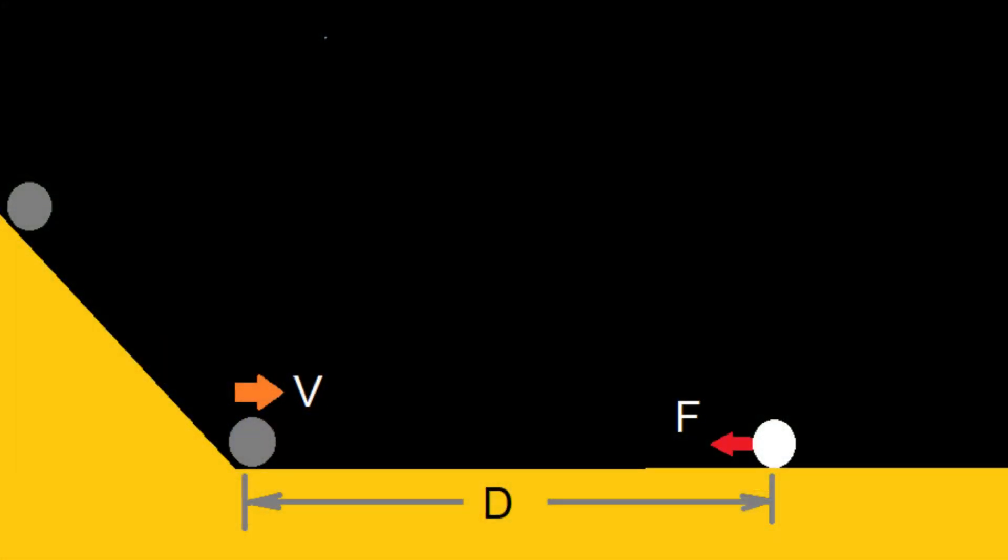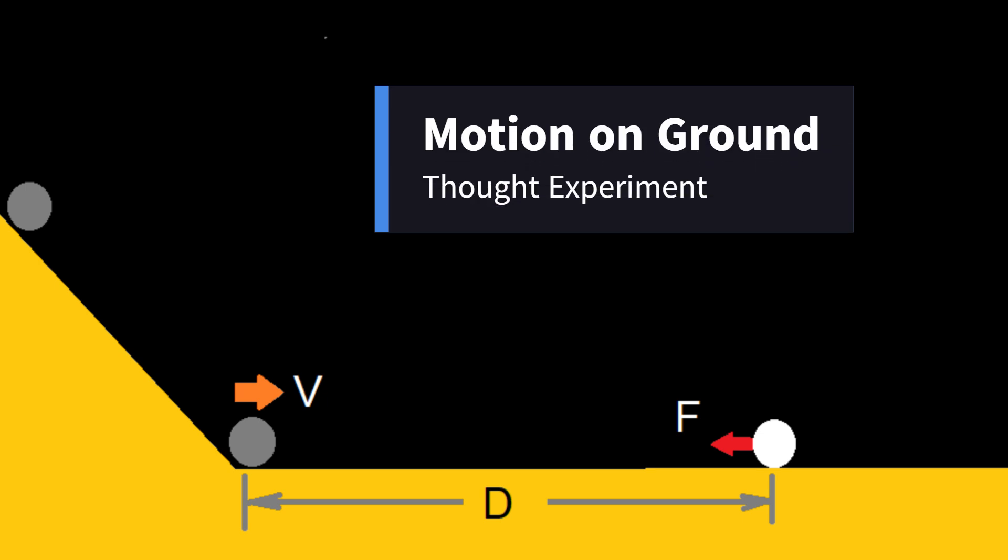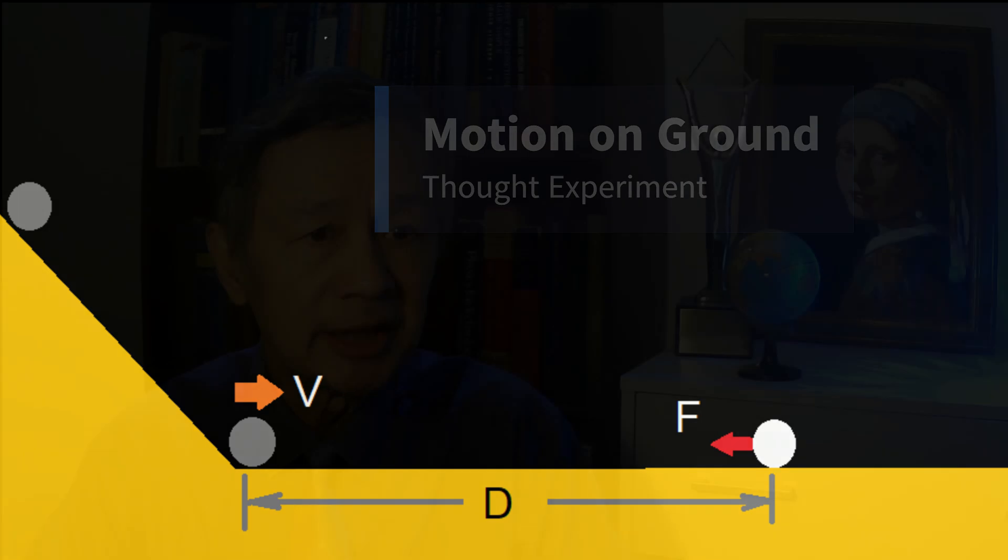Once the object moves to the horizontal track, the motion is slowed down until it completely stops after moving a distance. One could say simply, it is caused by friction.